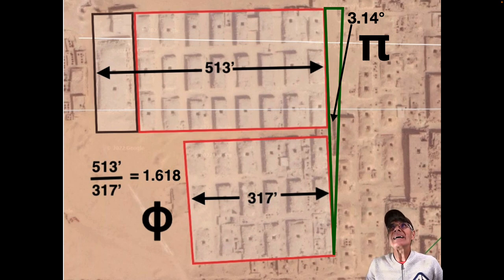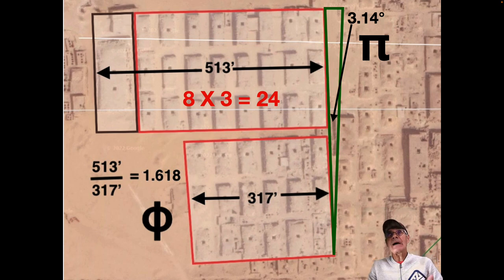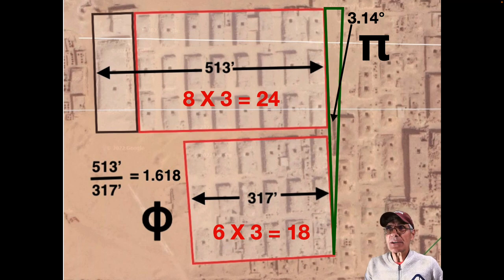So you got Pi and you got Phi. Now at the top there you've got three rows of eight, so there's 24 tombs up there. And this bottom section you've got three rows of six tombs, so there's 18.